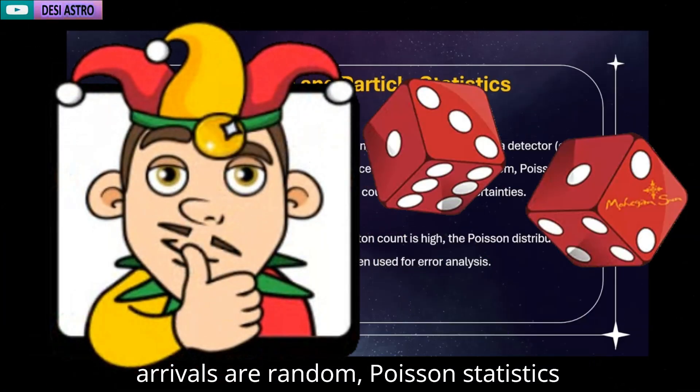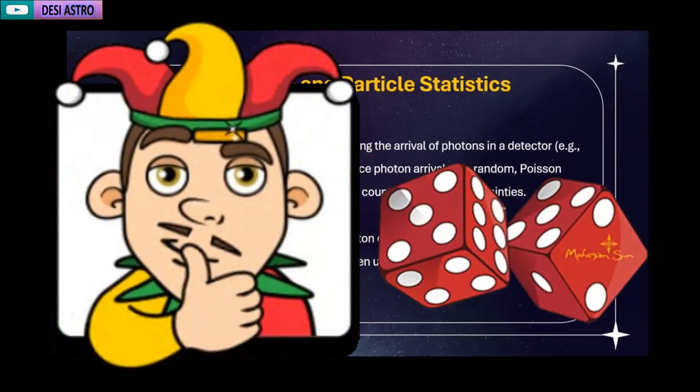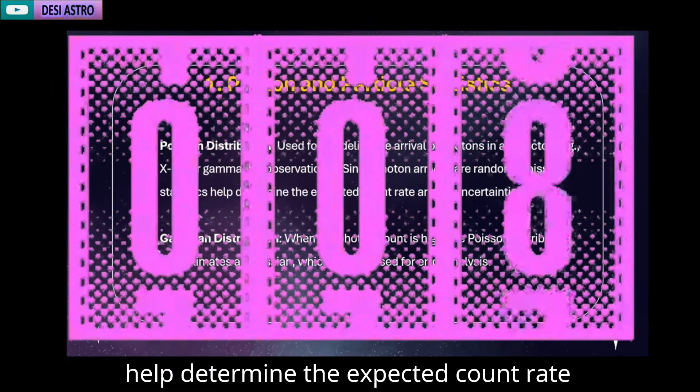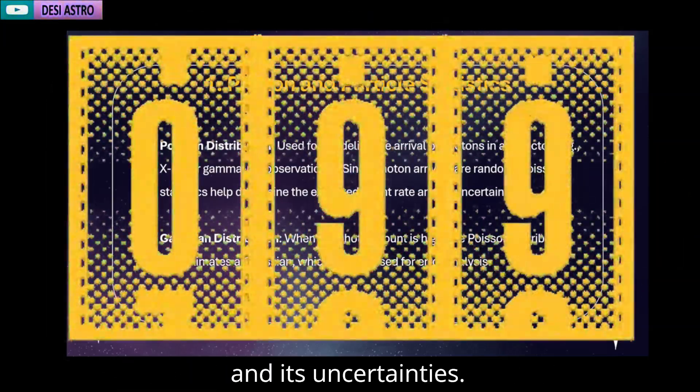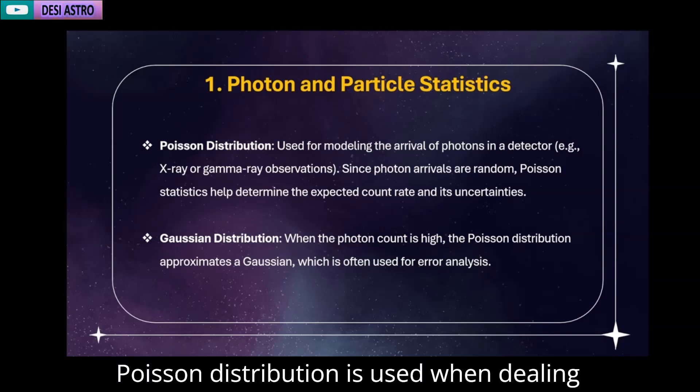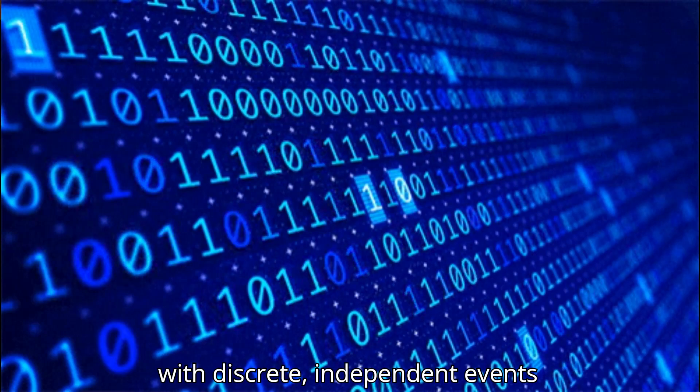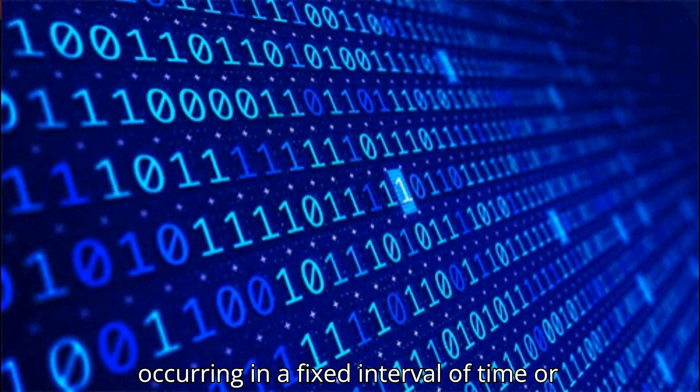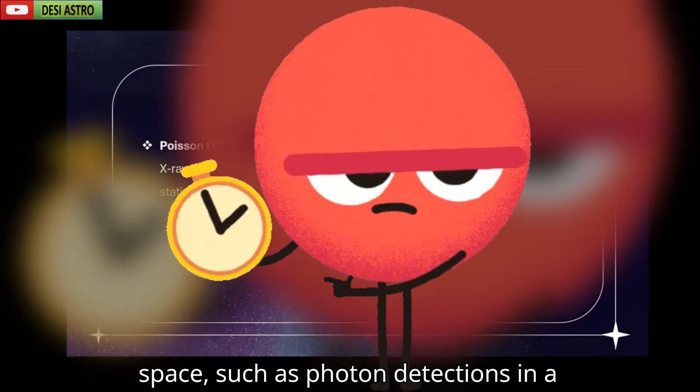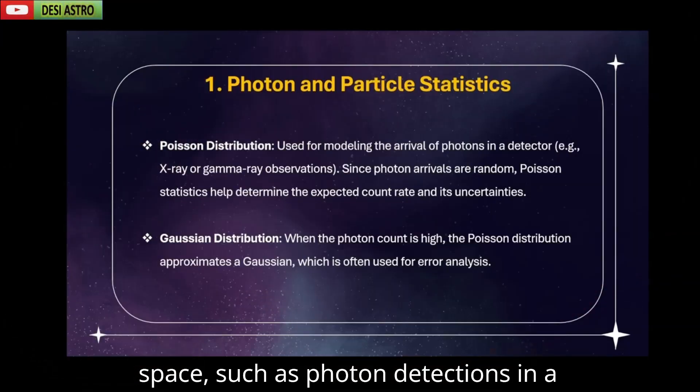Since photon arrivals are random, Poisson statistics help determine the expected count rate and its uncertainties. Poisson distribution is used when dealing with discrete independent events occurring in a fixed interval of time or space, such as photon detections in a telescope.